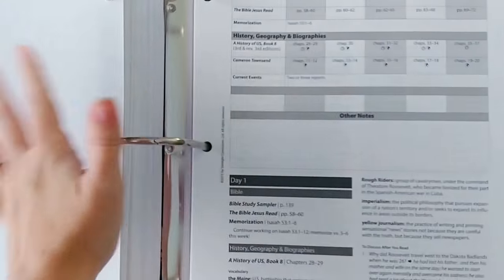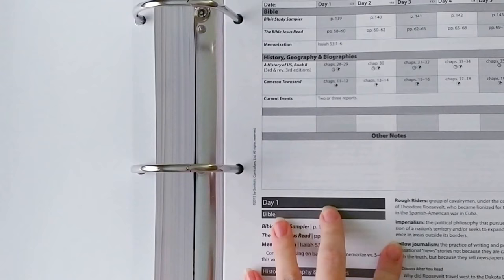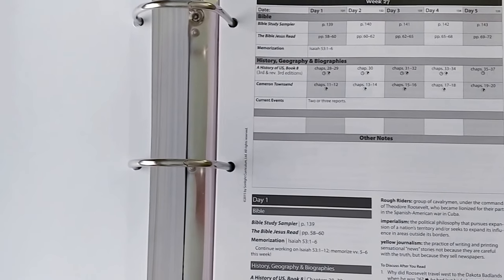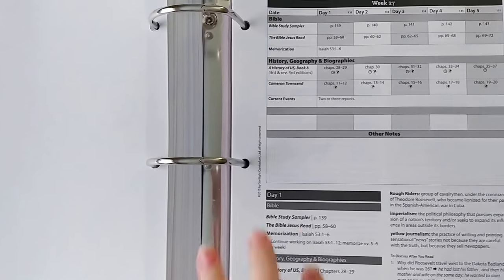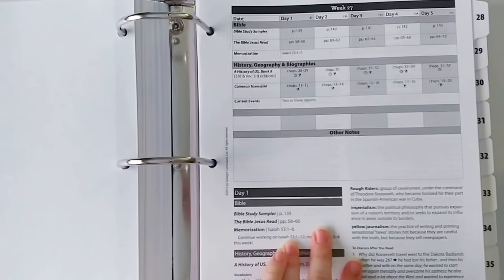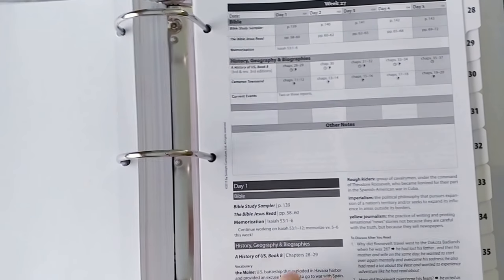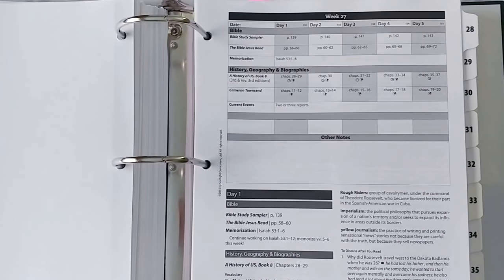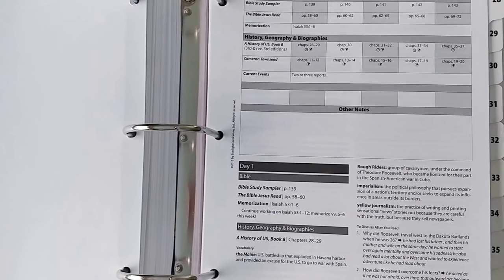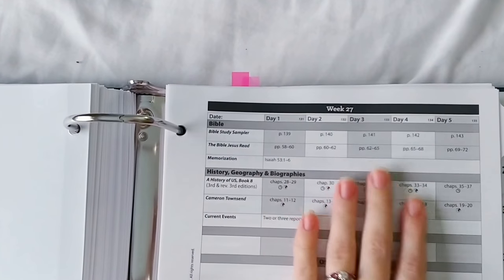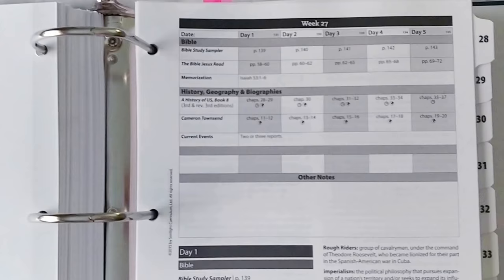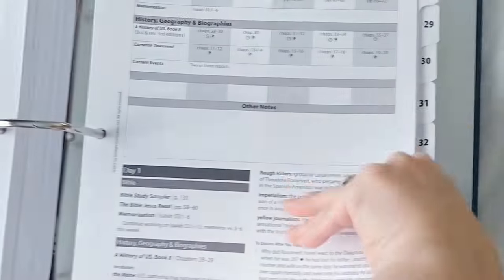Now, I do have a separate homeschool binder — I'll link that video for you. I take out whichever week we are working on and put it in my smaller teacher binder so I don't have to carry this big guide throughout the house. I just have the week he's working on. Also, when we go away — we've traveled quite a few times this year — it's so easy to take just a few weeks at a time in my smaller binder. He takes his student guide and his books, because everything is laid out for him, and he doesn't have to miss a beat.